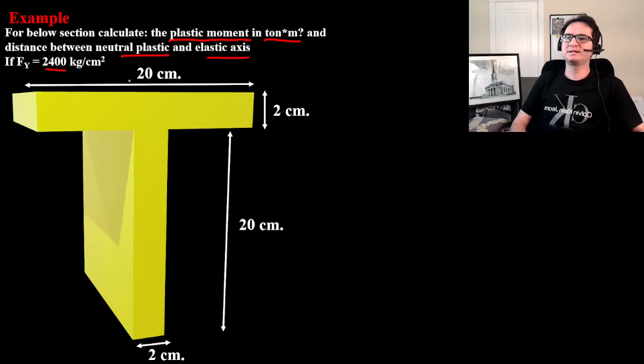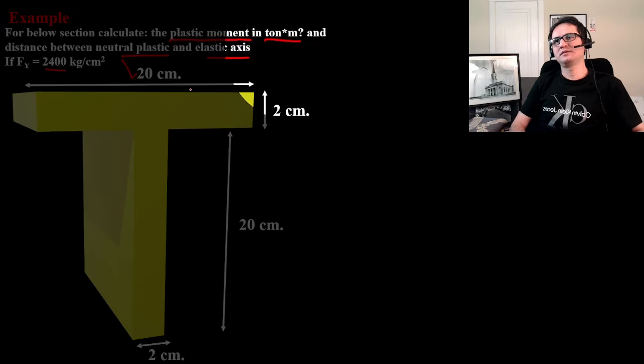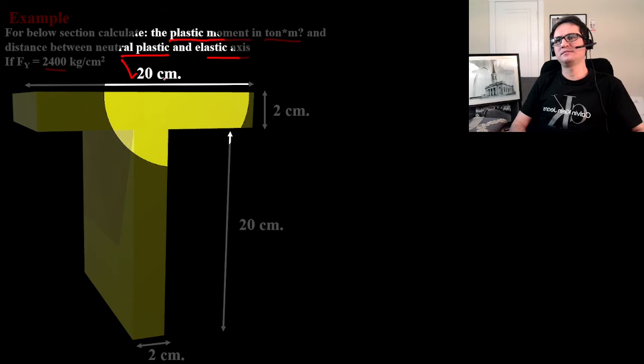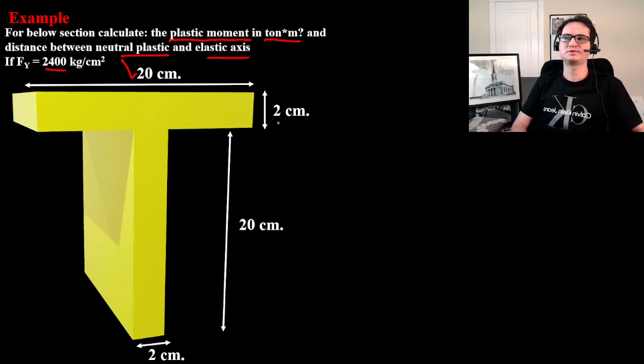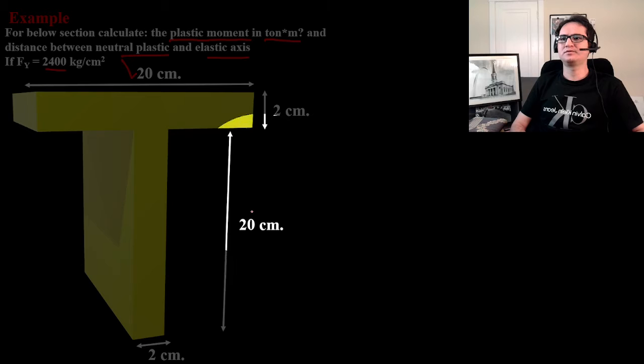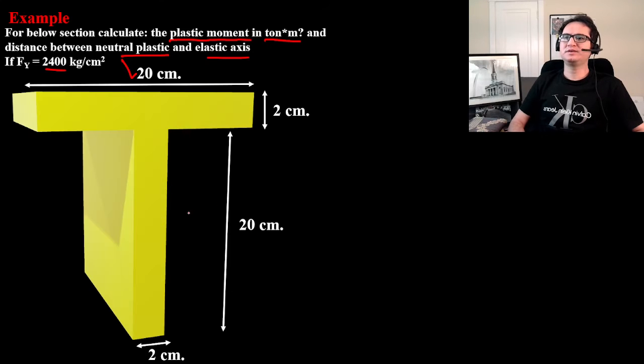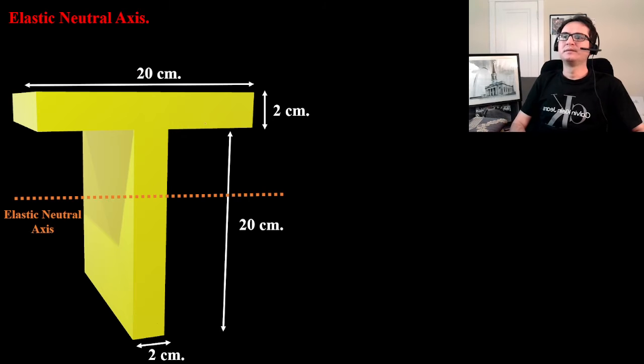So a T-section is provided with 20 centimeter width of flange and the height of flange is 2 centimeters. Height of web is 20 centimeters and the thickness of the web is 2 centimeters.